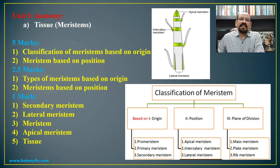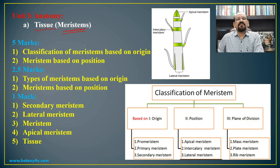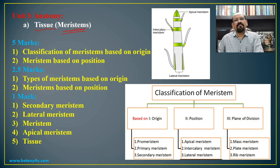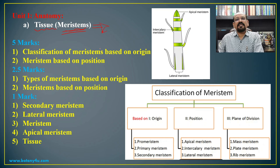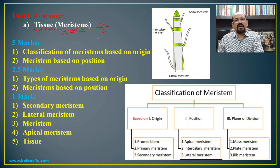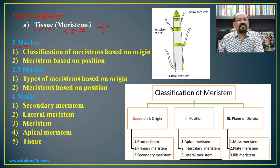In Unit 1, the first topic is meristems. Meristems are a group of cells having independent power of division, which is the characteristic feature of plants. These specific cells present in plants have independent power of division, and hence whenever we cut any branch of a tree, it keeps growing.